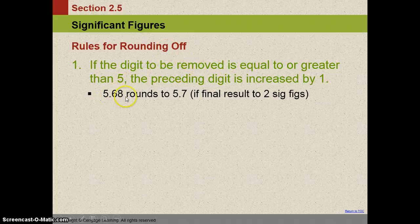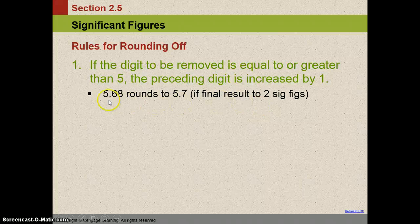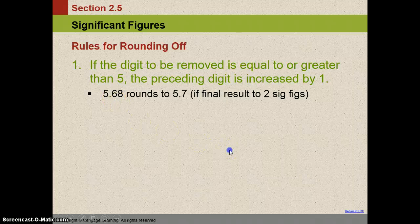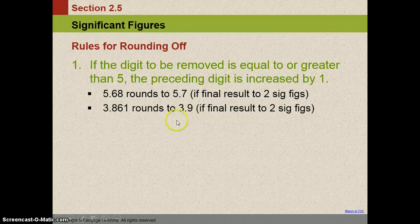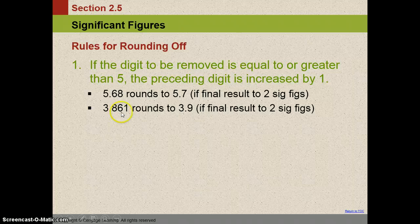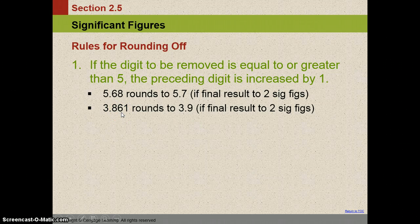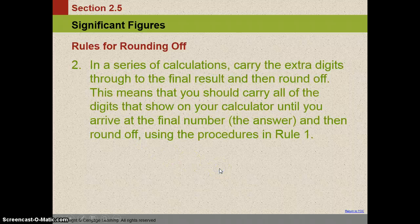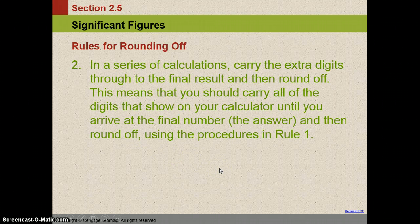If the digit is greater than five, we're going to round it up. So if we want two sig figs, it would be these two sig figs. We look at this position, it's greater than five. So we round the six to the seven, just like we do in math class. 3.861 rounds to 3.9 if I want two sig figs. If I want two, it's going to be these two right here. I look at this position, it's five or larger. So I'm going to round the eight to a nine.